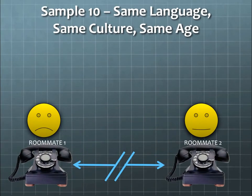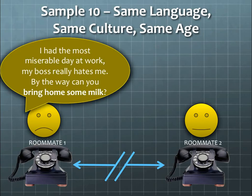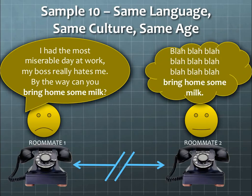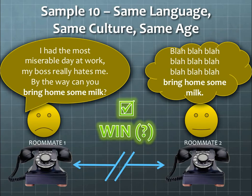In the last sample, we have the same language, same culture, and same age. This should be optimal, but sometimes it doesn't work. Two roommates talking on the phone: the first says, 'I just had the most miserable day at work. My boss really hates me. By the way, can you bring home some milk?' The other roommate just hears, 'blah blah blah... bring home some milk.' If they come home with milk, that might be considered a communications win — or is it?